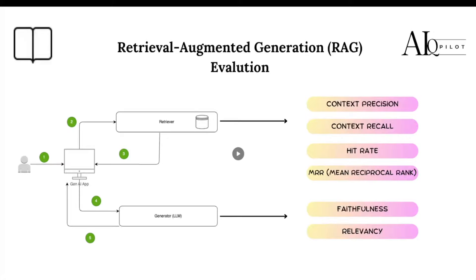Usually all these LLMs such as GPT, Llama, and all those language models generate responses based on the context provided to the input. The RAG system can enable enhancement in the context that is provided to the model. So if the context is enhanced, we can expect the model to generate more meaningful information for the users.